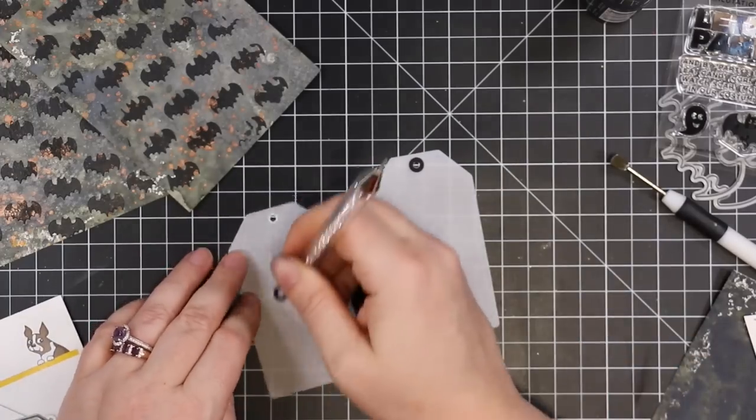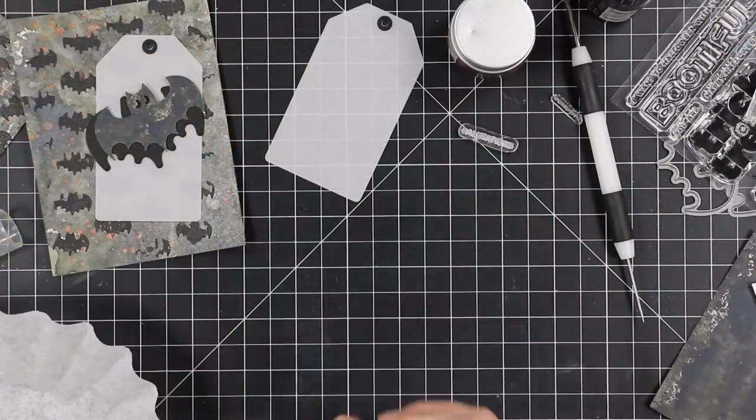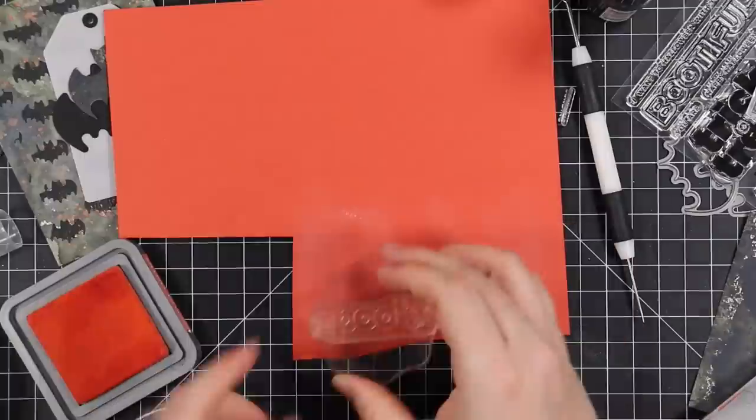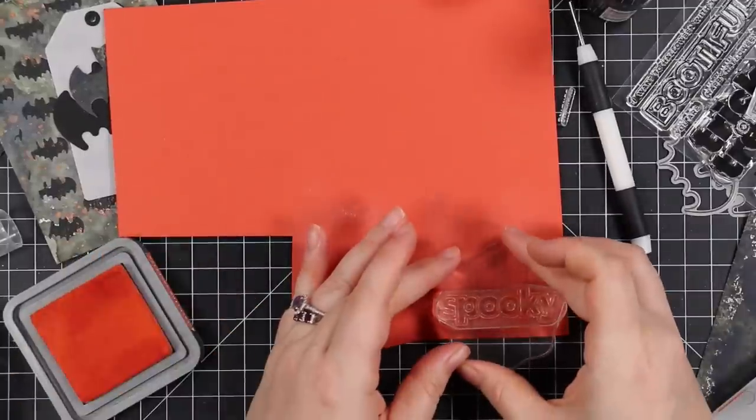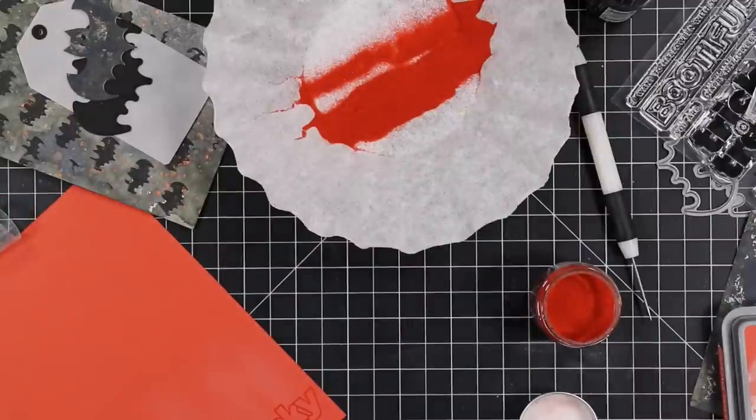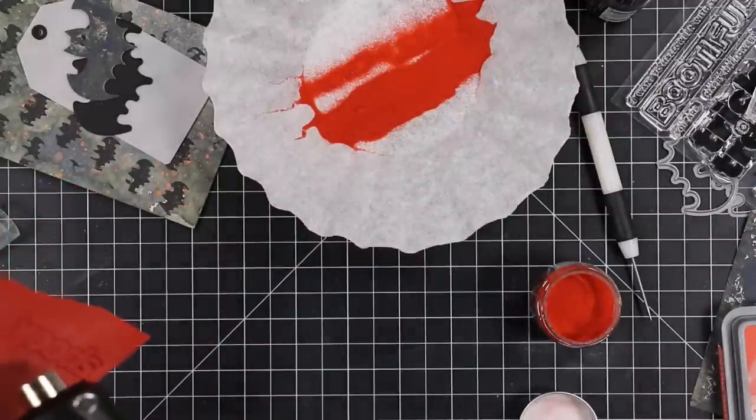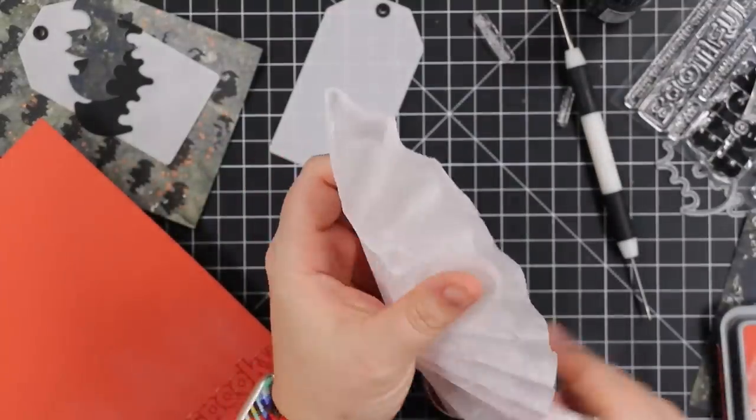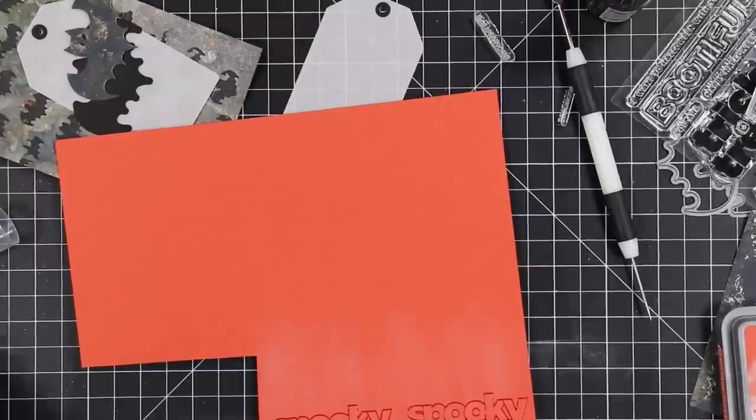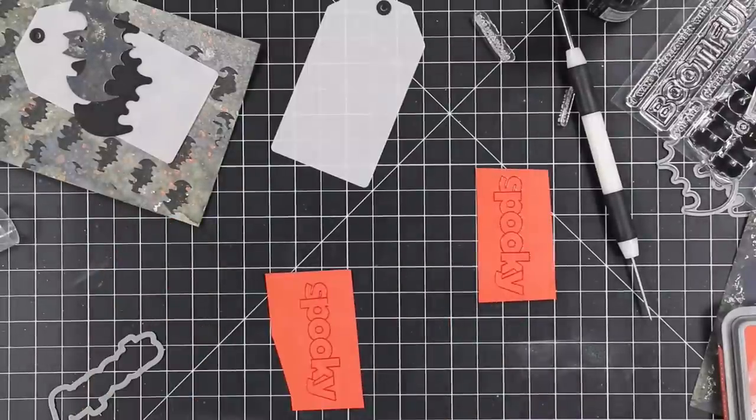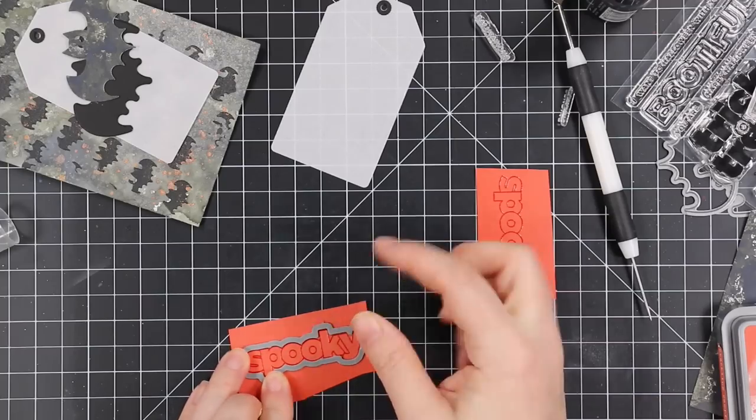I either want liquid or foam squares. When adhering over something like crackle paste, you want a really strong adhesive. Generally dimensional adhesive is the best way to go. I die cut the reinforcers from the set from some black cardstock and adhered those to my tags. Then I pulled out some burnt orange cardstock and I'm going to stamp the spooky sentiment from the CZ Design Halloween People stamp set. I used my anti-static powder tool and stamped the sentiment with crackling campfire distress oxide ink, nice deep orange, and then heat embossed that with crackling campfire distress embossing glaze.